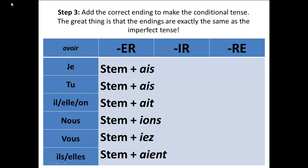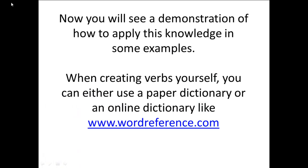The endings are: A-I-S, A-I-S, A-I-T, I-O-N-S, I-E-Z, A-I-E-N-T. Now you'll see a demonstration of how to apply this knowledge in some examples. When creating verbs yourself, you can either use a paper dictionary or an online dictionary like wordreference.com.